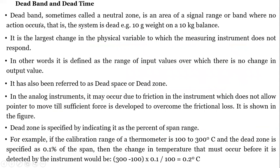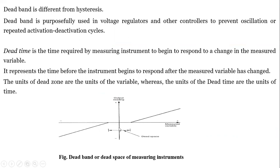Dead band and dead time are related concepts. Going from negative to positive output values, there is a range on the measured variable axis — both on the negative and positive sides — where the instrument will not respond; this is the dead space or dead band. Dead band is purposefully used in voltage regulators and controllers to prevent oscillation or repeated activation. Dead time is the time required by the measuring instrument to begin to respond to a change in the measured variable.